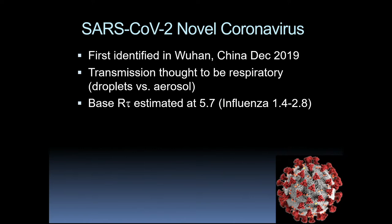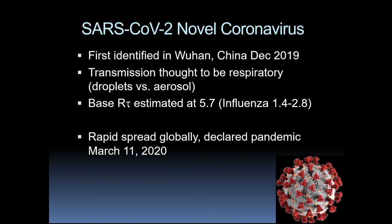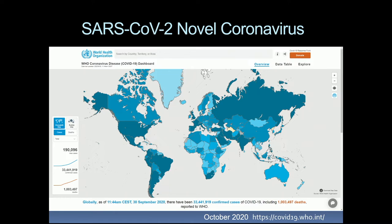Not news to anybody at this point: SARS-CoV-2, the novel coronavirus, was first identified in Wuhan, China in December of 2019. There is still some debate on how exactly it is transmitted, but it is leaning more towards aerosolized rather than droplet transmission. The R-naught value, which we closely follow, is quite high — initially estimated for the original coronavirus at 5.7 — and some subsequent variants may be even higher. There was rapid spread globally, and it was declared a pandemic on March 11th, 2020, which in some ways seems like it was just yesterday.